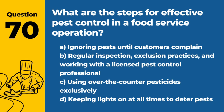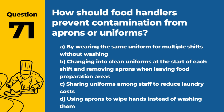Question 70. What are the steps for effective pest control in a food service operation? The answer is B: Regular inspection, exclusion practices, and working with a licensed pest control professional. Effective pest management is integral to food safety.